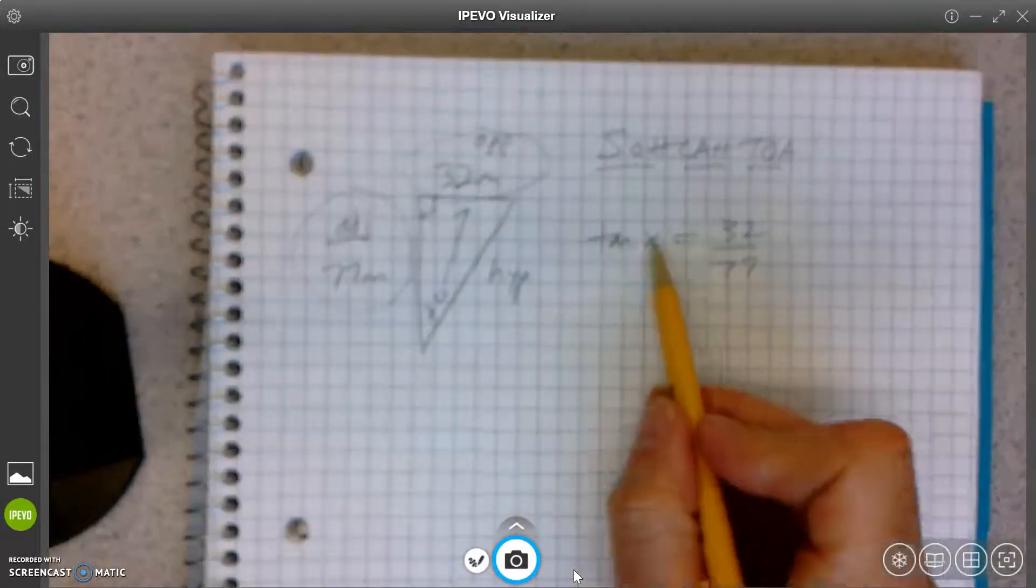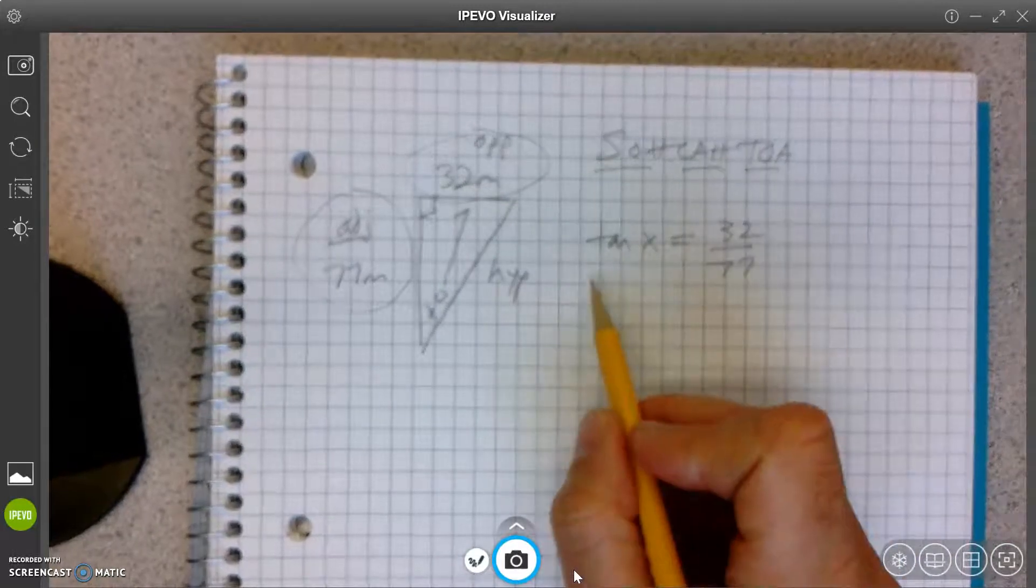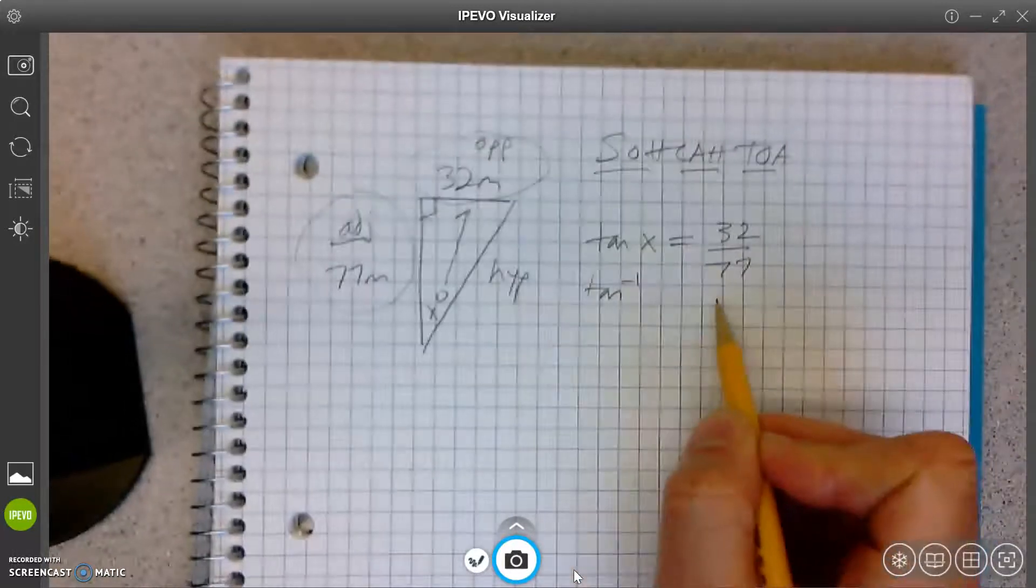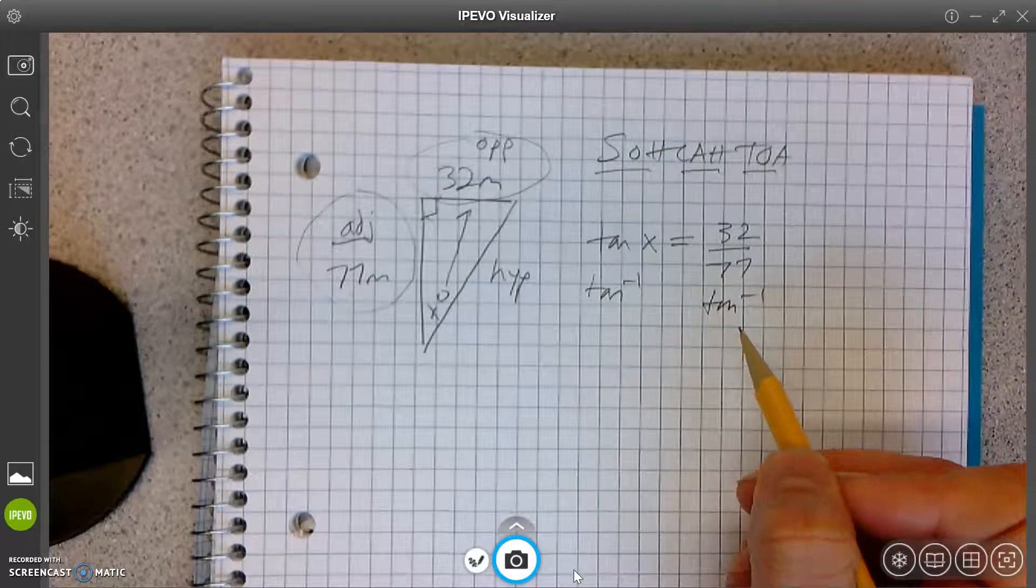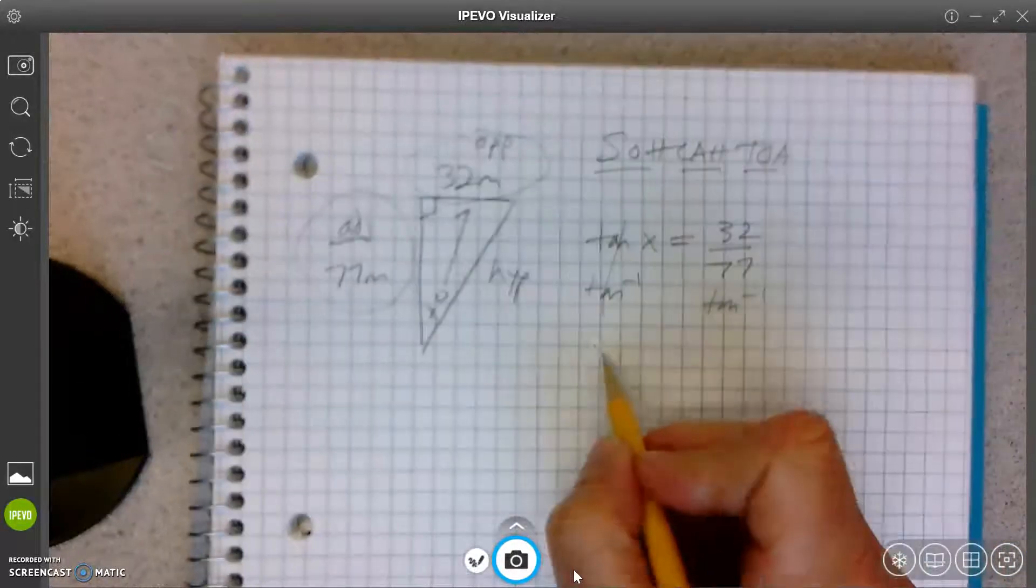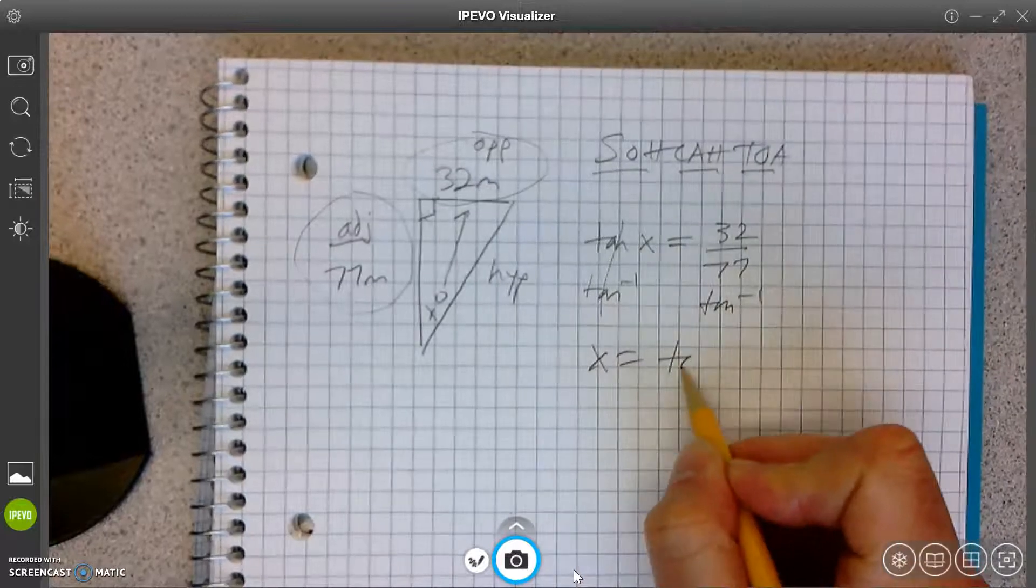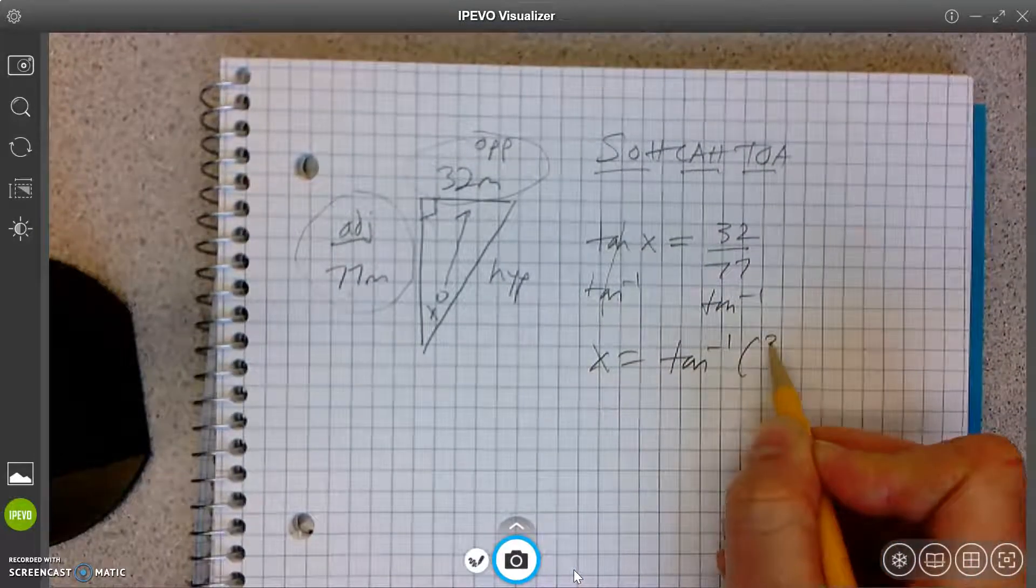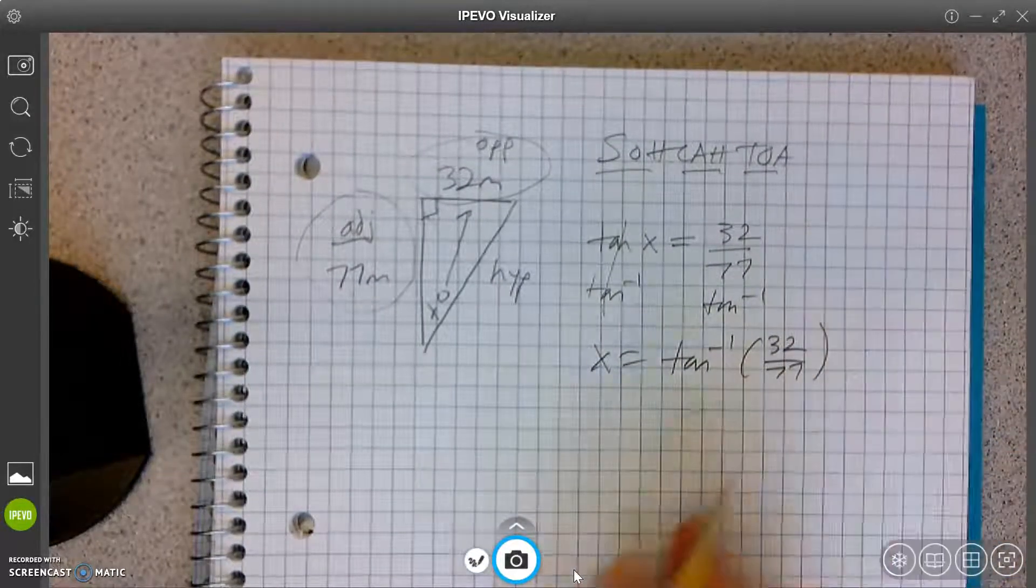Okay. So remember, I'm solving for X so I can get rid of this tangent. What am I going to do? Yep. Inverse tangent, both sides. There we go. Because tangent and inverse tangent are opposite. So X equals inverse tangent of 32 over 77.